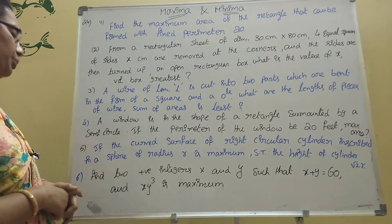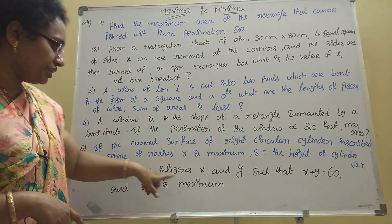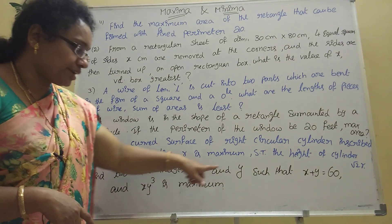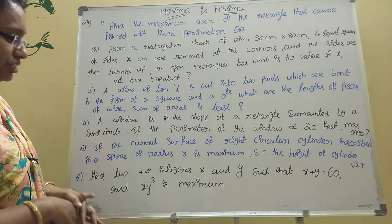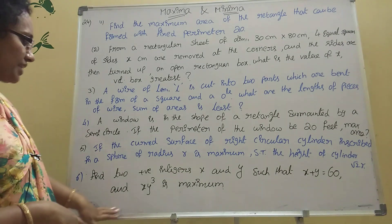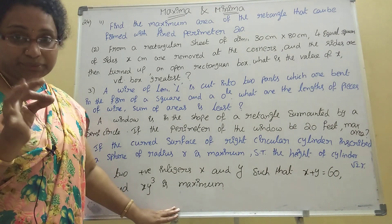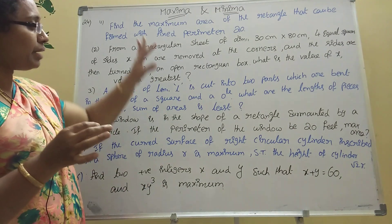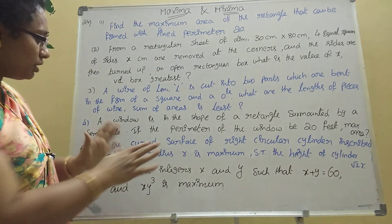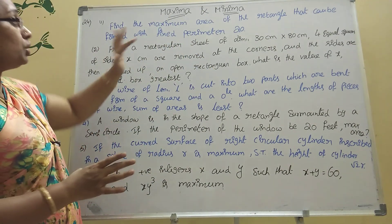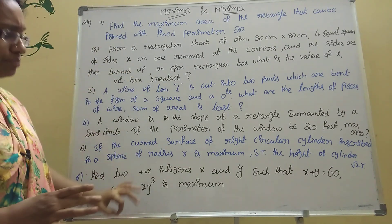Sixth problem: Find two positive integers x and y such that x + y = 60 and xy³ is maximum. The numbers and pattern will not change — questions come exactly like this only. Practice all six sums.